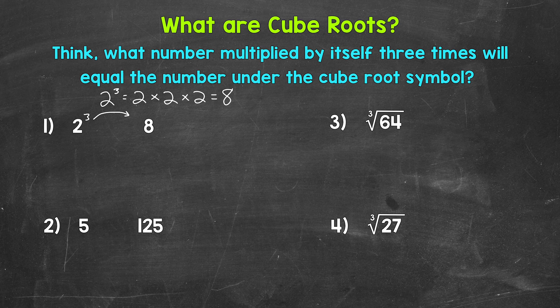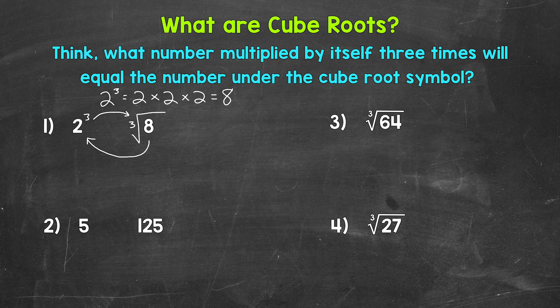Now, going off of 2 cubed, let's move on to looking at a cube root. A cube root is the inverse of cubing a number, which means the opposite of cubing a number. We need to think: what number multiplied by itself 3 times will equal the number under the cube root symbol? For example, let's find the cube root of 8. Well, 2. The cube root of 8 is 2. So we can see the relationship there — 2 cubed equals 8, and the cube root of 8 equals 2.